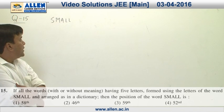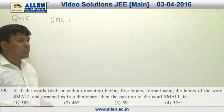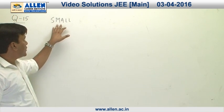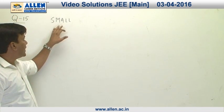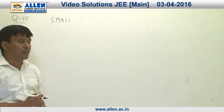This is a question related to permutation and combination in which we are given the word SMALL. Now what are we going to do? We need to arrange a dictionary of small letters and we need to tell what is the rank of this word SMALL.